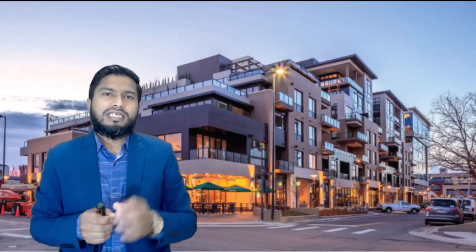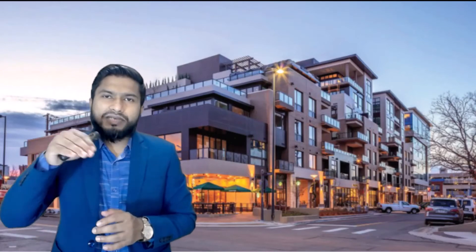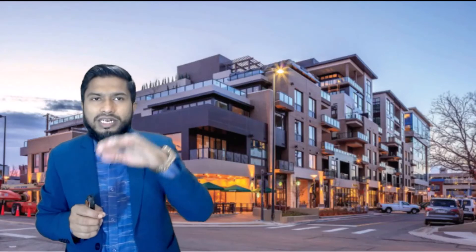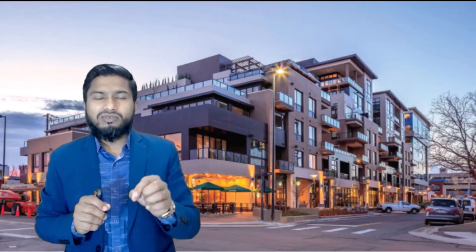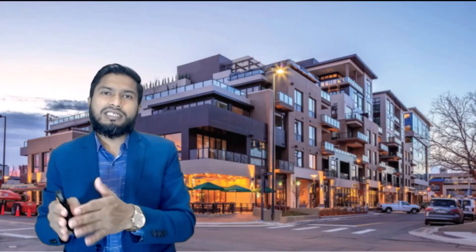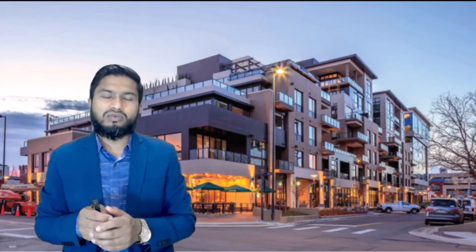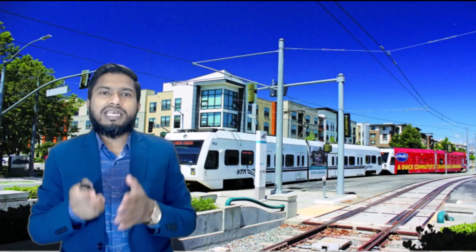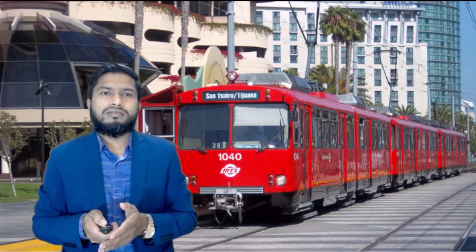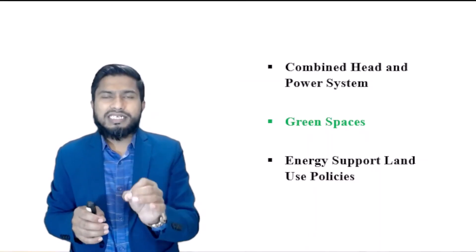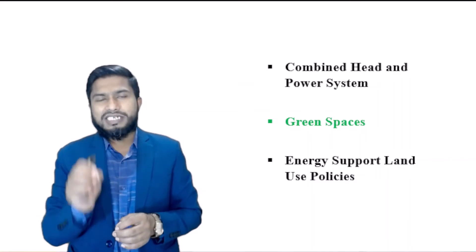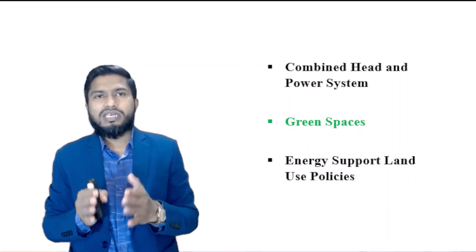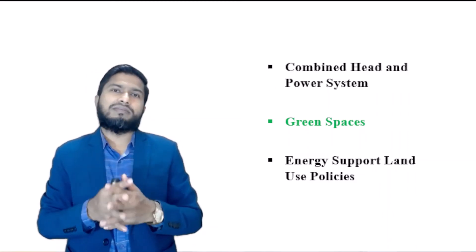On the other hand, the most efficient way of achieving energy efficiency in the built environment can be achieved through land use planning, with the view to lowering energy requirement or consumption by reducing vehicle miles travelled using a variety of methods including mixed use development, urban block development, and transit-oriented development. In addition, establishing combined heat and power systems, ensuring available green spaces, and energy-supportive land use policies can unlock energy efficiency and ensure sustainable development.